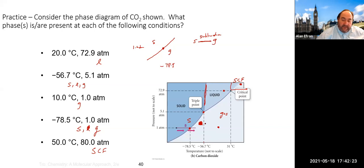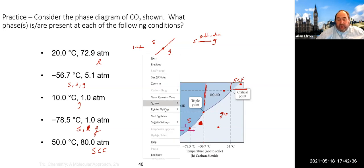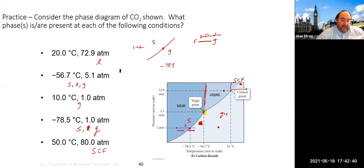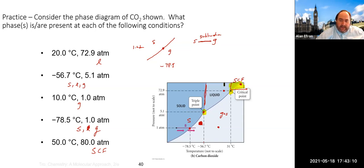The solid to gas transition is sublimation, liquid to gas is evaporation, and going backwards is the reverse. There are a couple of important points on phase diagrams. One is the triple point, which is the pressure-temperature relationship at which all three phases — solid, liquid, and gas — are occurring at once. There's also the critical point, which is where we find the critical temperature and pressure. Past that point, the substance has liquid-like properties but flows like a gas — that is what is called a supercritical fluid.